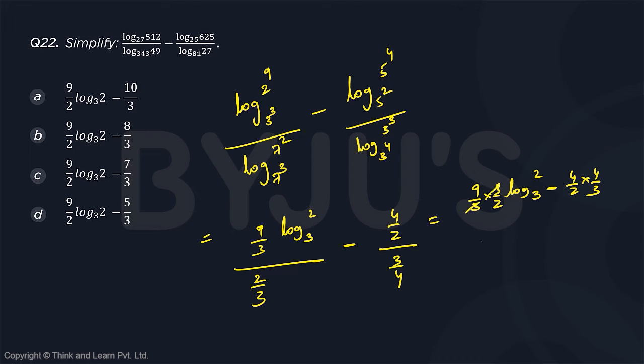So 3 goes, so you will get 9 by 2 log 2 base 3 minus 16 by 16. So in fact, you can cancel out 2.